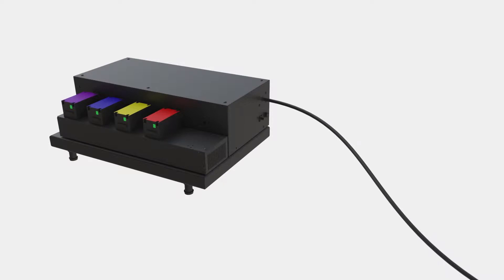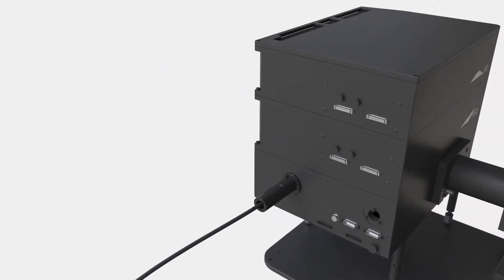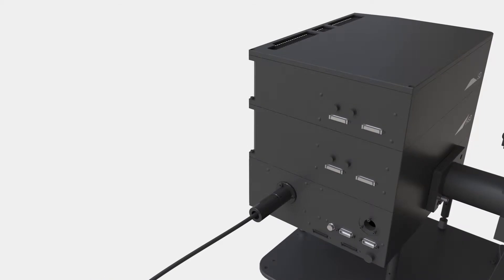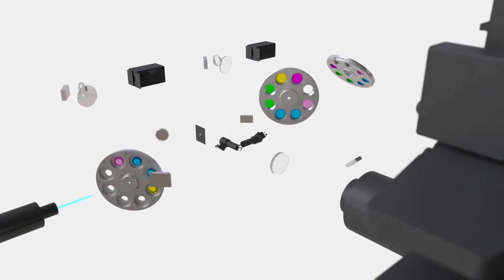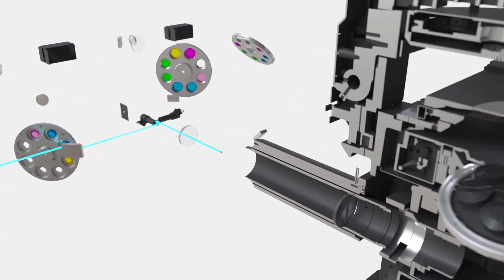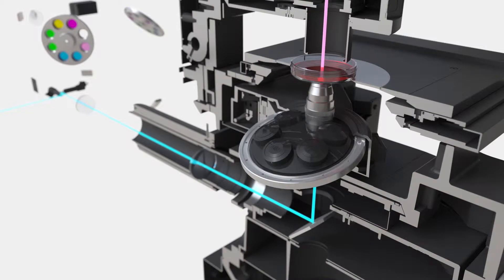The FV3000 microscope has an all-diode suite of lasers featuring up to seven individual laser lines from 405 to 640 nanometers. Inside the scanner, the excitation laser beam is guided to the sample by the excitation dichroic and silver-coated scanning mirrors.